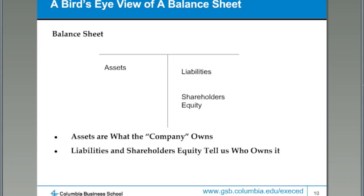Every financial statement also includes a balance sheet. A balance sheet is a little bit more complicated than the income statement. The balance sheet has two sides — on one side there are assets, and on the other side there are liabilities and shareholders' equity. A simple way of thinking about it is that assets are simply a listing of everything that the company owns, while liabilities and shareholders' equity tell us who owns it and how much of each of it they own.